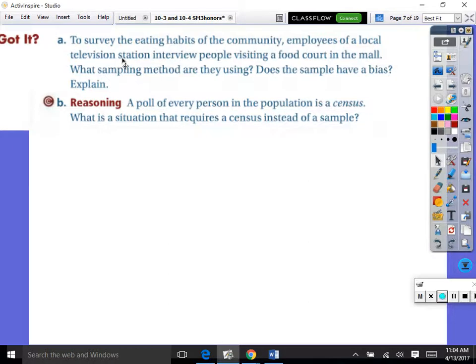To survey the eating habits of a community, employees of a local television station interview people visiting a food court in the mall. What sampling method are they using? Convenience. Good. Does the sample have a bias? They're eating food. Right.